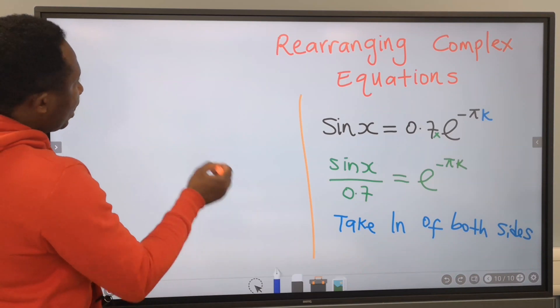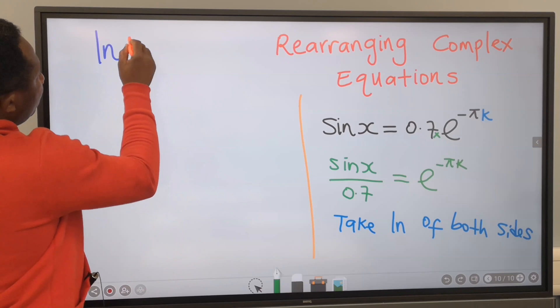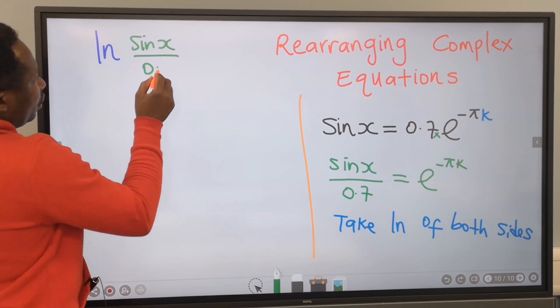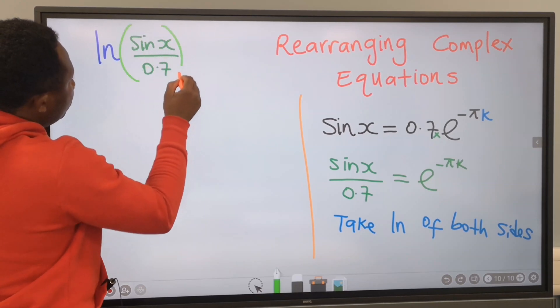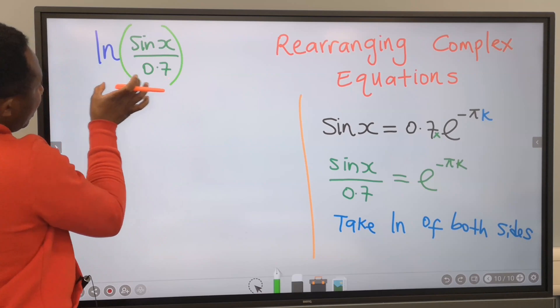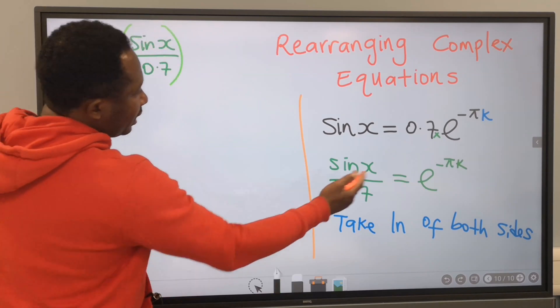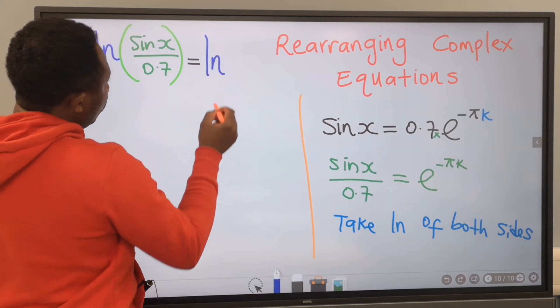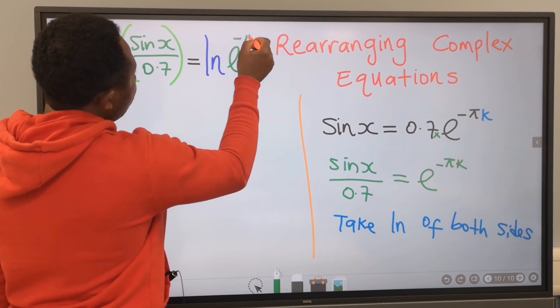And I'm going to have that the natural log of sin x over 0.7. This will be enclosed in a bracket because everything here, we're taking the natural log. And on the other side, we're also going to take the natural log of e to the minus pi k.